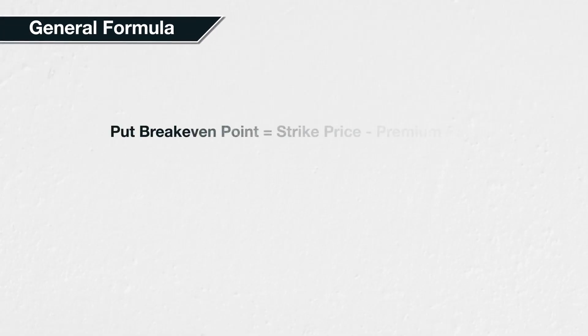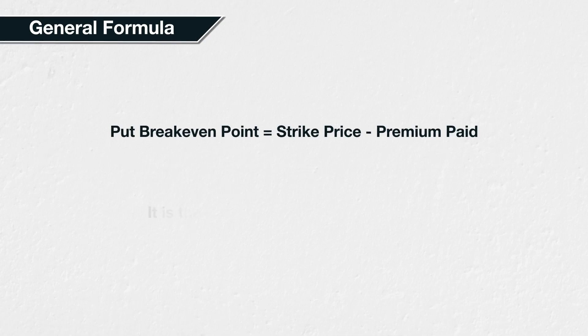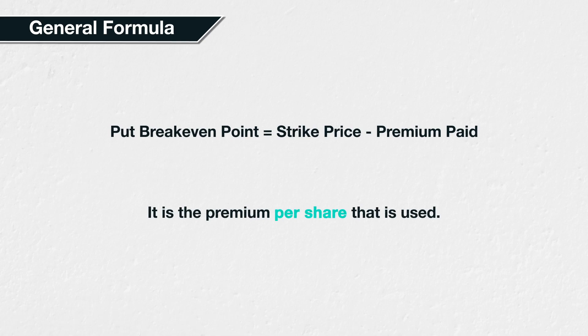More generally, the break-even point of a put option can be calculated as strike price minus the premium paid. It's important to remember that it's the premium paid per share that you need to use when making this calculation. The contract multiplier for SLV was $100, so when we purchased the put option, the total premium paid was actually $154. It is the per-share price of $1.54, though, that we use when making the break-even calculations.